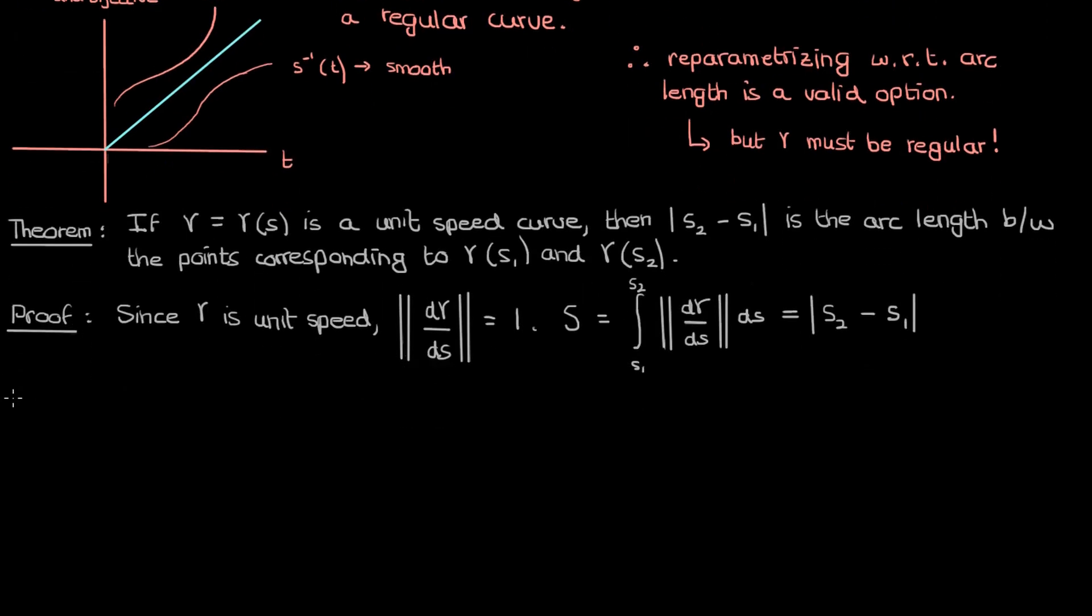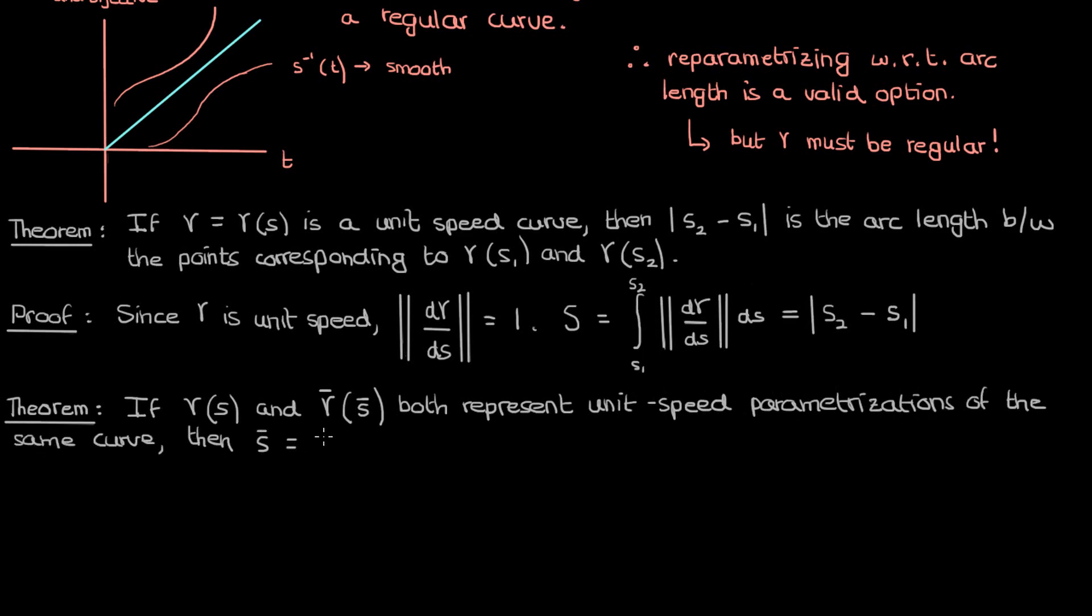Now there's another important theorem we have to cover before calling it a lecture. This theorem is also pretty simple. It says that if γ(s) and γ̄(s̄) both represent unit speed parametrizations of the same curve γ, then the parameter s and s̄ are pretty much the same, except for some displacement constant c.